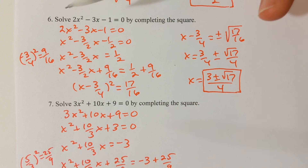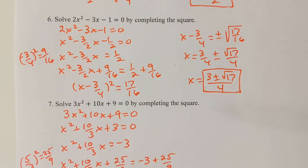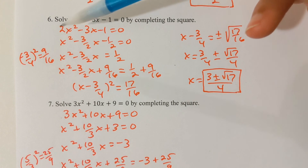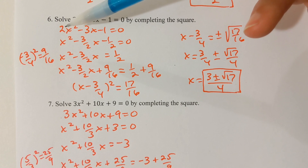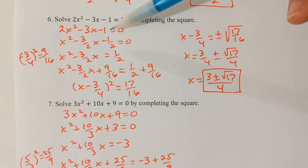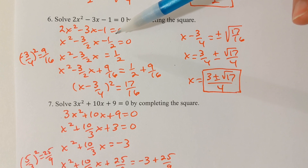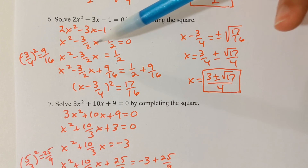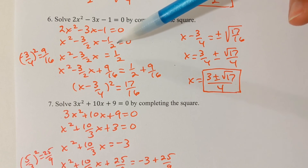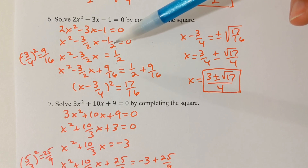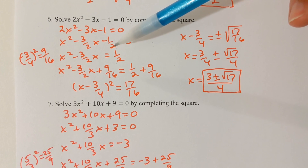Let's try another one — problem 6, solve by completing the square. The first thing is that you always want to get a 1 in front of x². Here I've got a 2, so I'm going to divide throughout these three parts by 2. In doing that, you sometimes create fractions at the beginning — that's okay, that still has to be step one.